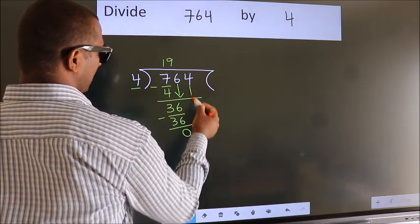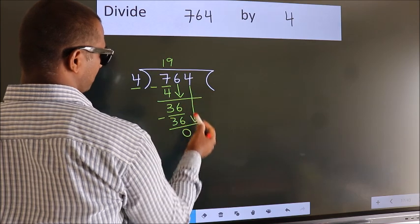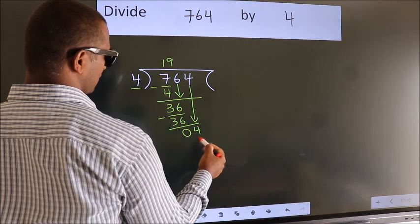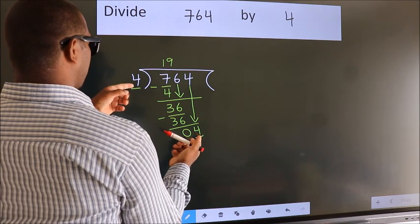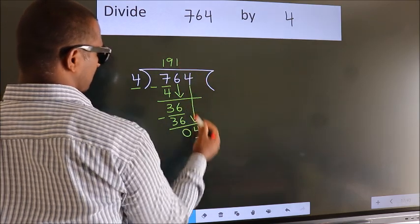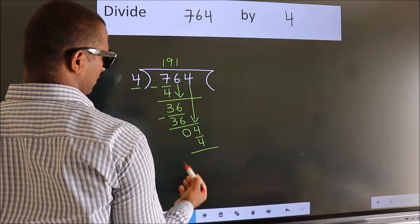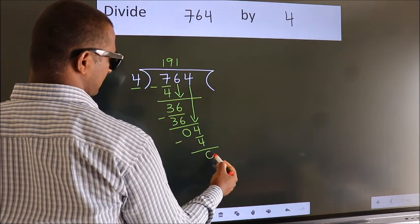After this, bring down the beside number. So 4 down. So 4. When do we get 4? In 4 table. 4 once 4. Now we subtract. We get 0.